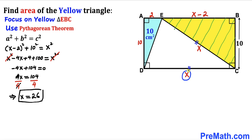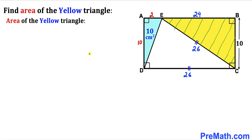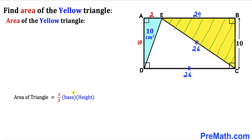So x = 26 cm, meaning both of those side lengths are 26 cm. And 26 minus 2 gives us EB = 24 cm. Now for the final step, let's calculate the area of the yellow shaded triangle. Recalling area = ½ × base × height, our base is 24 cm and our height is 10 cm.